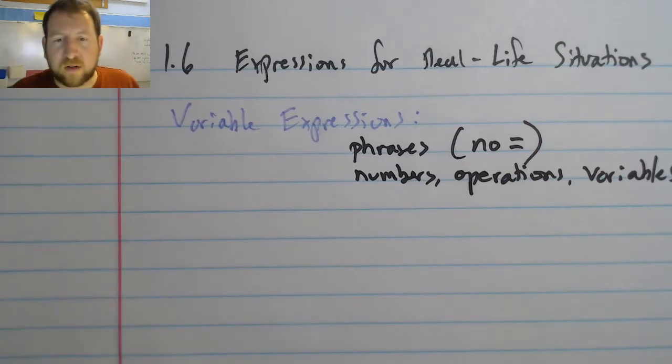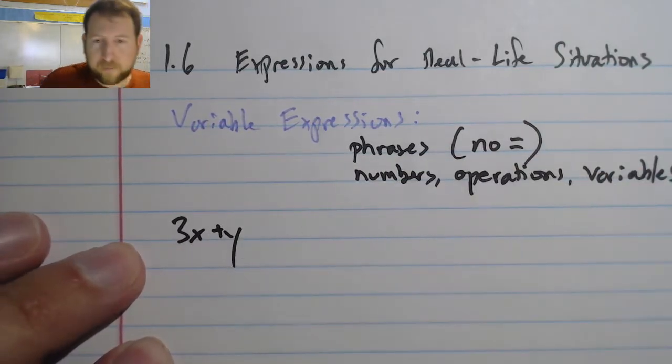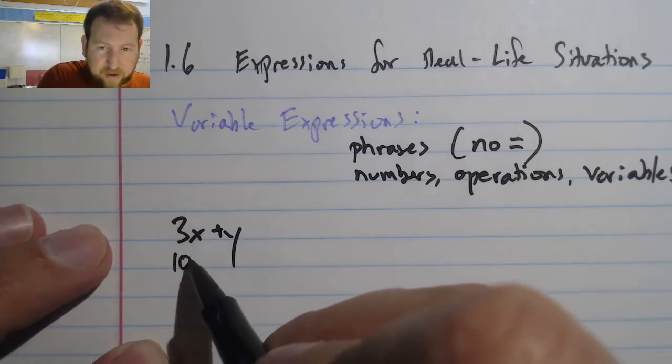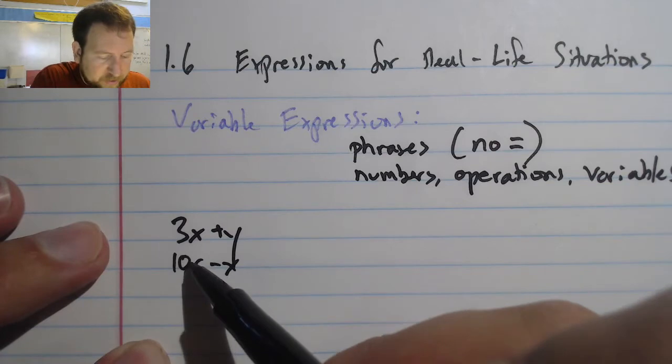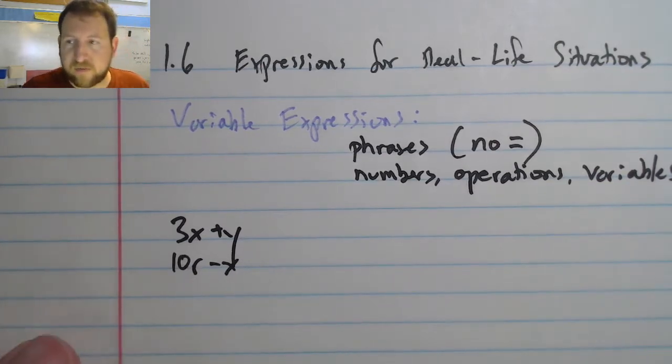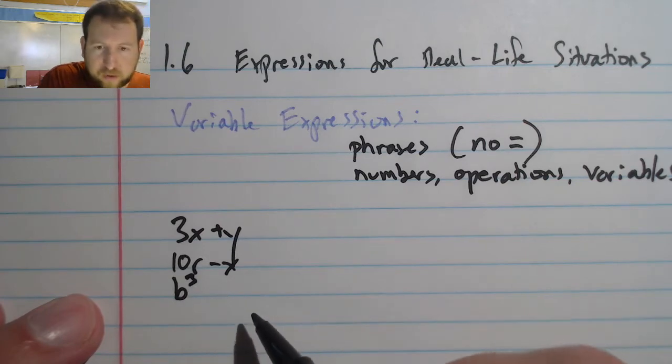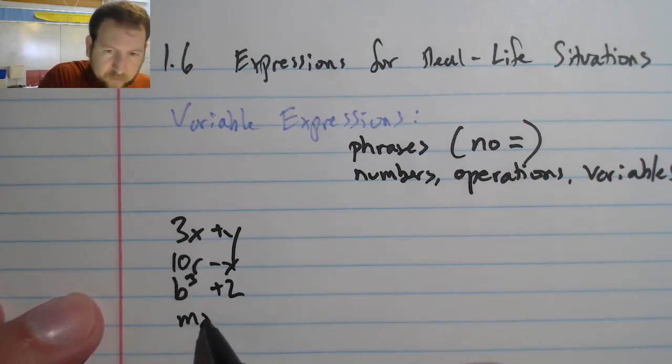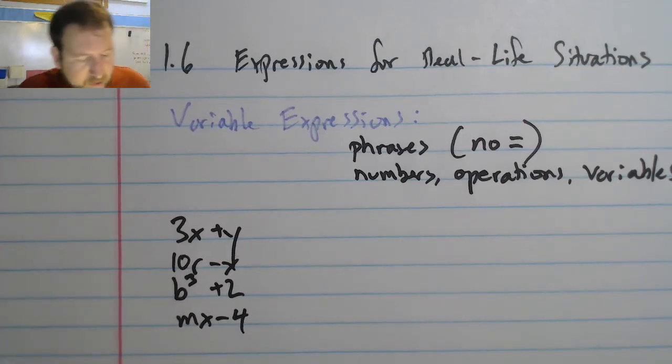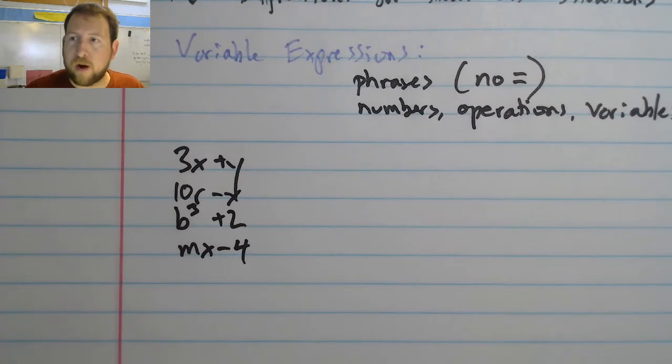And those look like this: it could be 3x + y, or could be 10r - x. Notice that there's operations of multiply and operations of subtract. We could also have b³ + 2, or even mx - 4.